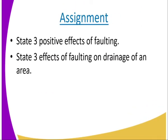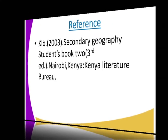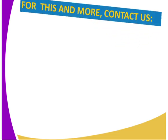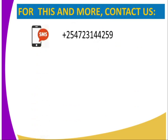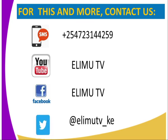The assignment activity for today: state three positive effects of faulting. Number two, state three effects of faulting on drainage of an area. If you want to refer, use the KLEB 2003 Secondary Geography student book. You can also reach us through SMS, YouTube, Facebook, or Twitter. Stay tuned to EDIM TV. Thank you, bye.